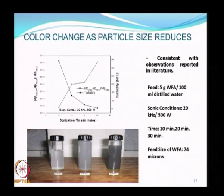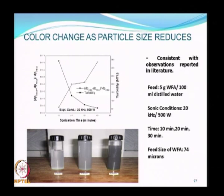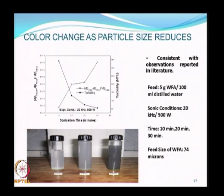The graph shows sonication time in minutes on the x-axis, particle size on the left vertical axis—which decreases to a very low value—and turbidity and suspension color on the right vertical axis. With increasing sonication time, the color becomes darker and darker, indicating many more particles in suspension but of smaller sizes. This confirms that color change can be correlated to size reduction when subjecting a suspension to sonication.